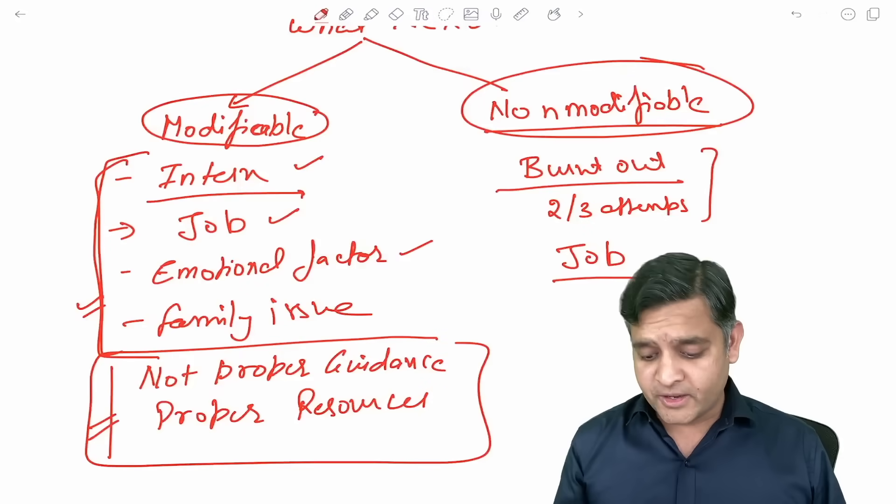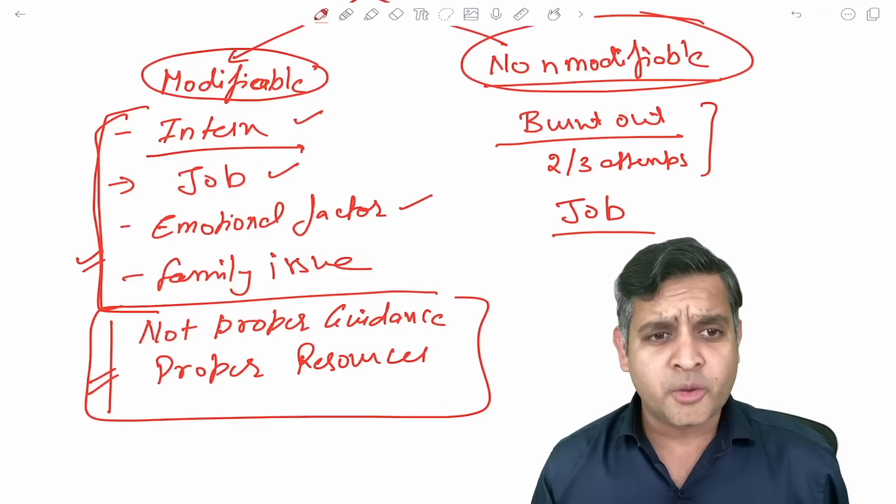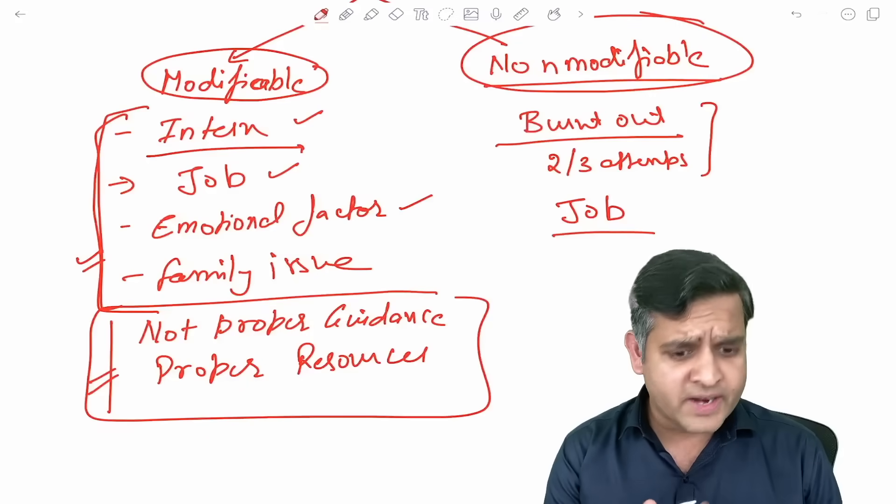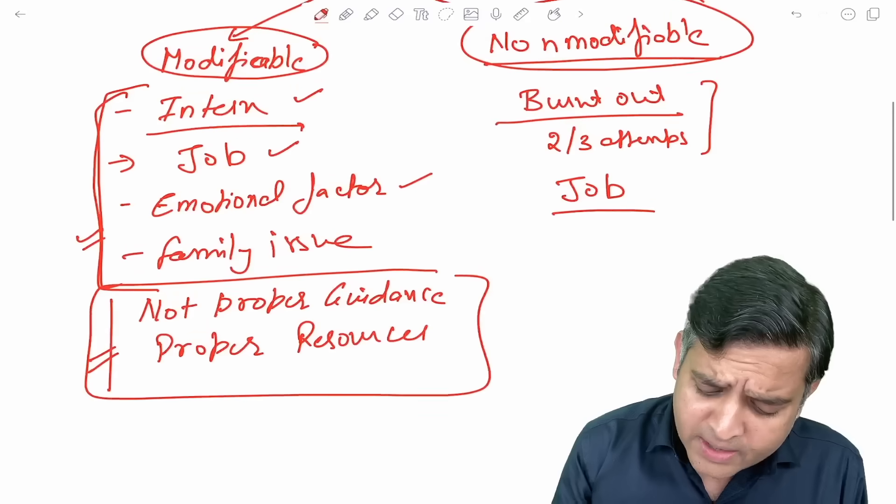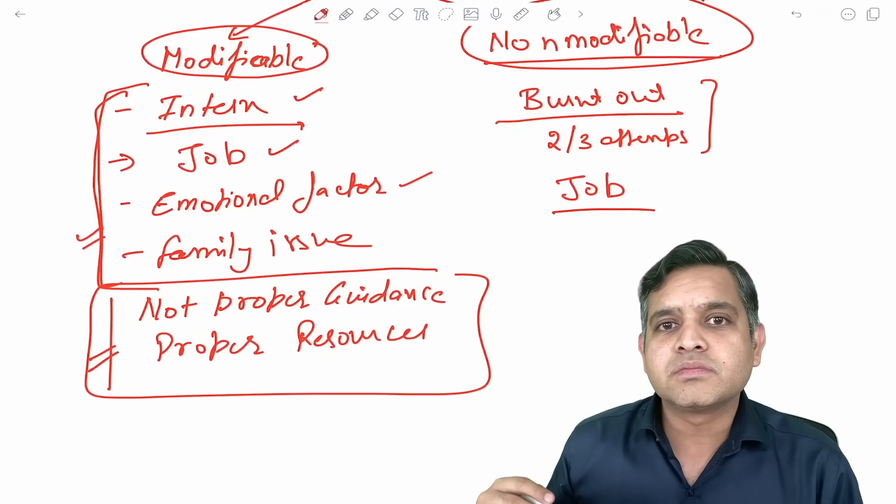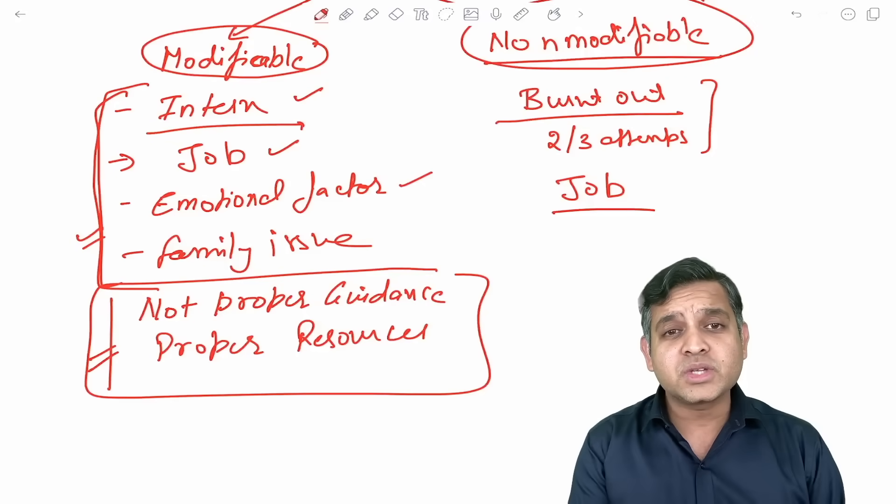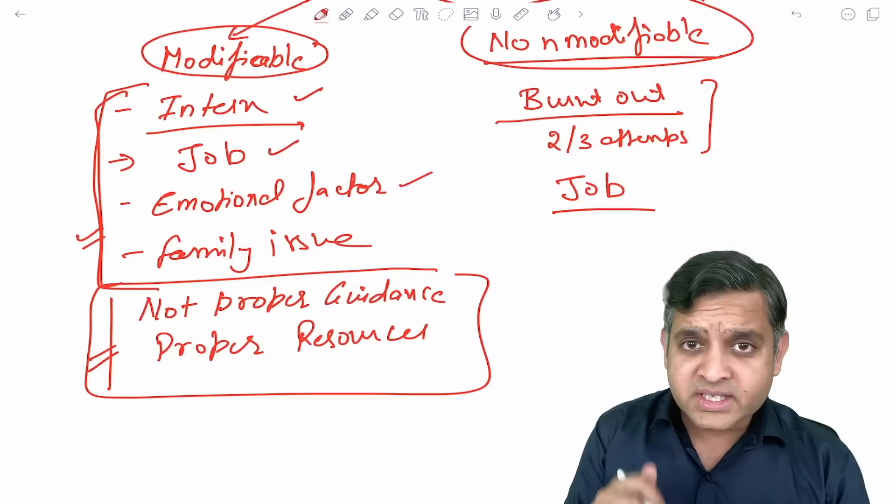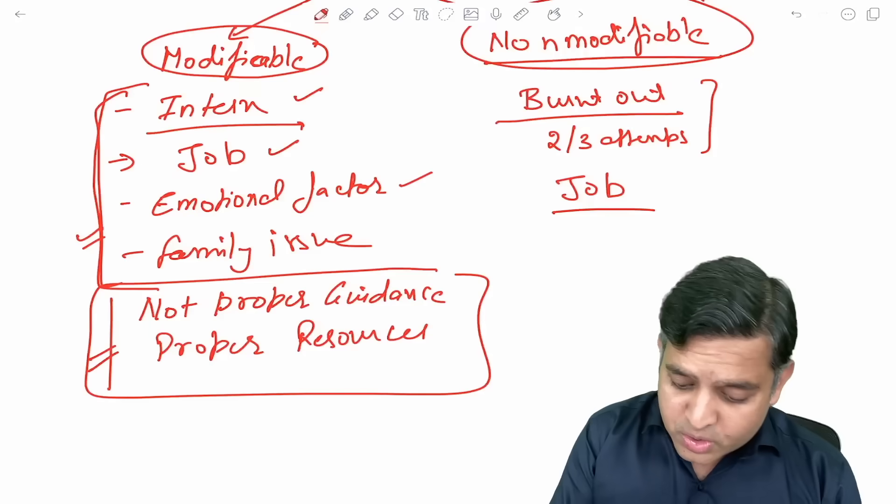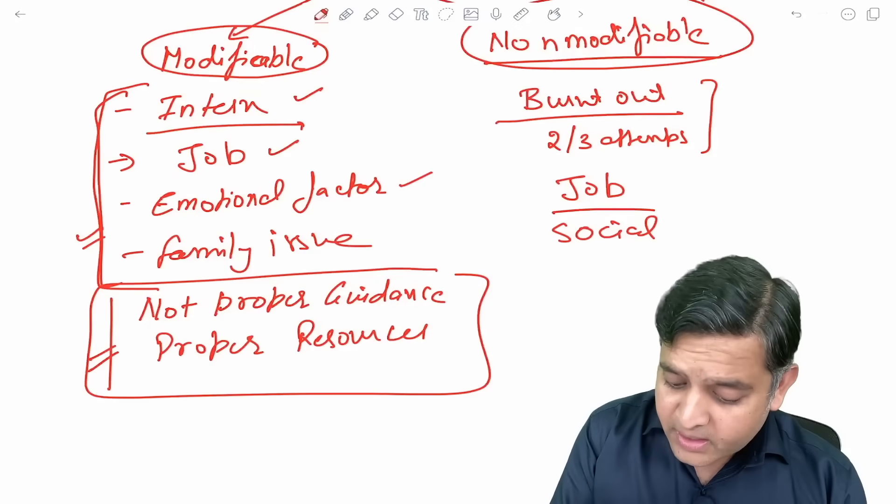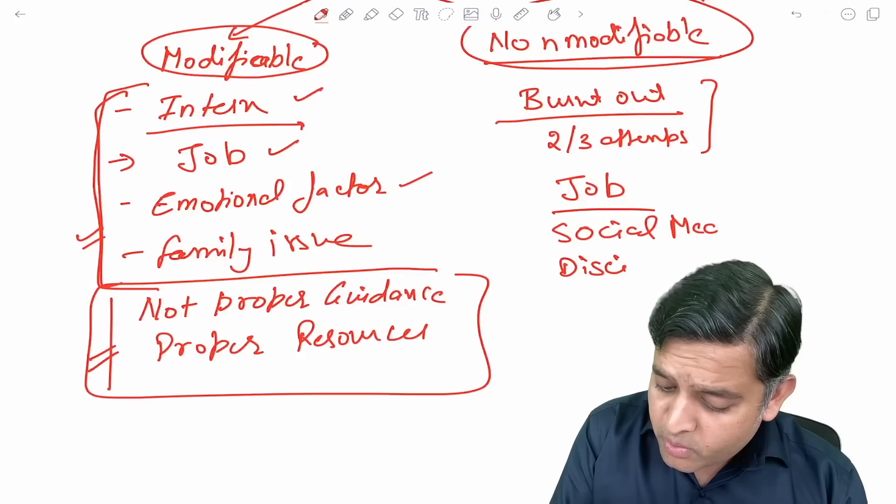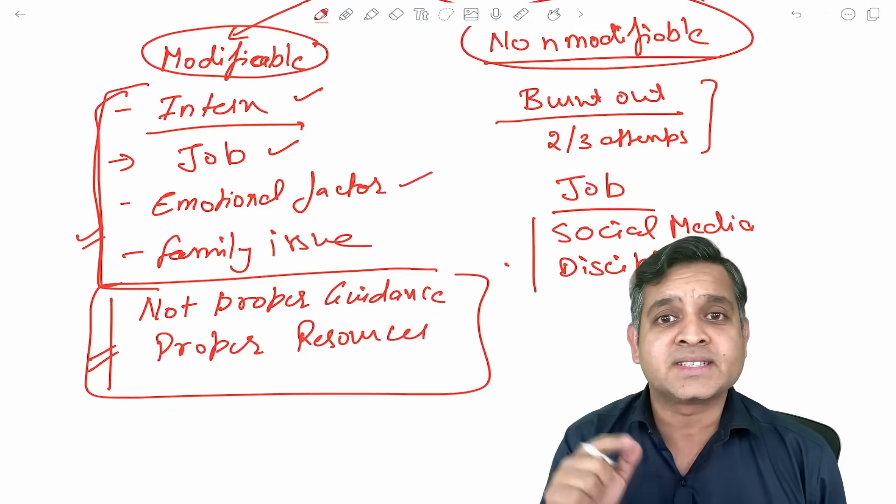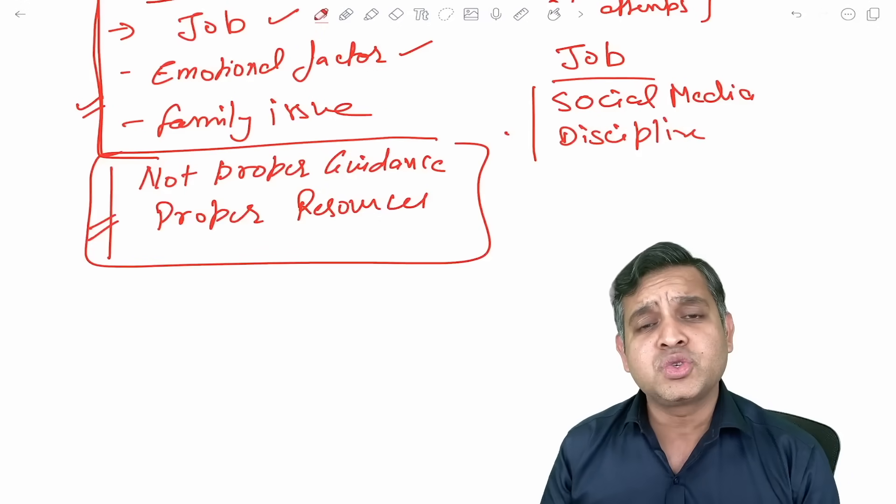A lot of time what are the other non-modifiable factors? Sir, it was my drop year. I was not doing any job, there was no emotional factor, there was no family issue but I was addicted to social media. Tell me what will you do this year so that you will not be addicted to social media? So I was not able to maintain discipline. What will you do now this year so that you will be able to maintain discipline? Social media, lack of discipline. What will you do so that these factors are not getting a hindrance again?